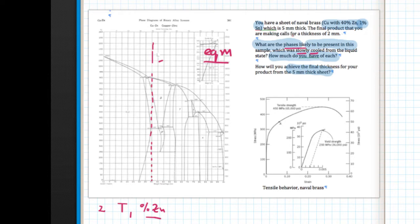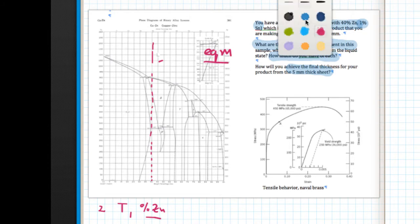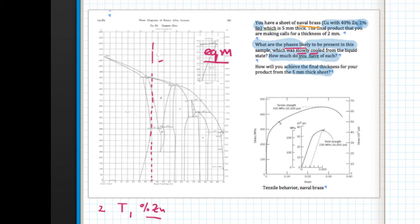Now what about the composition or the temperature? Well, it tells you the problem. You have a sheet of navel brass. If you have that sheet, you are probably at room temperature. So the brass is probably at room temperature. So the temperature is down here.